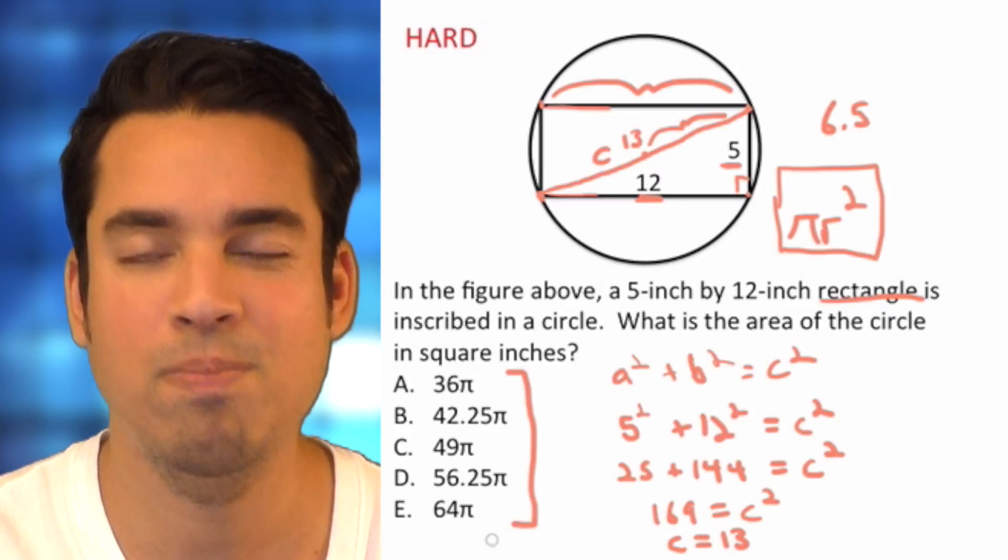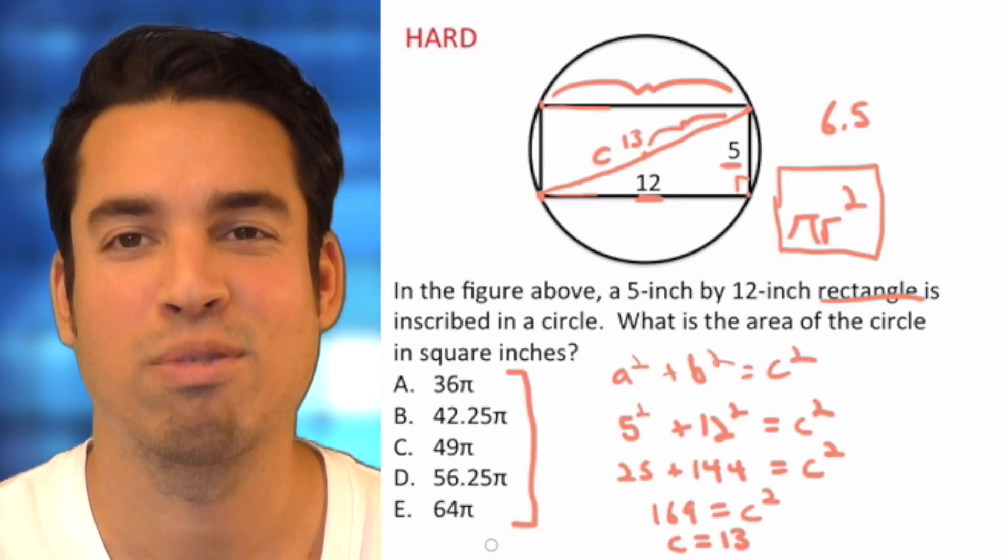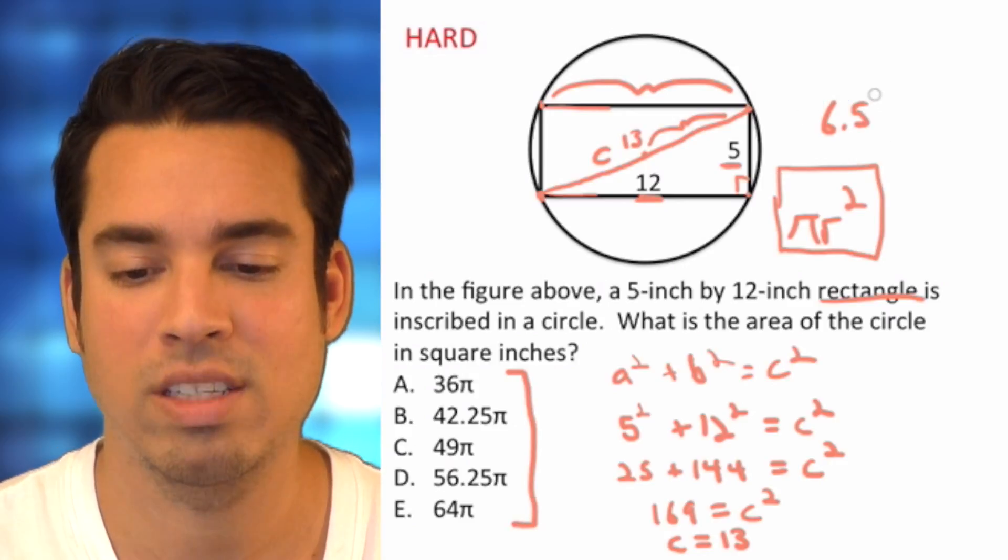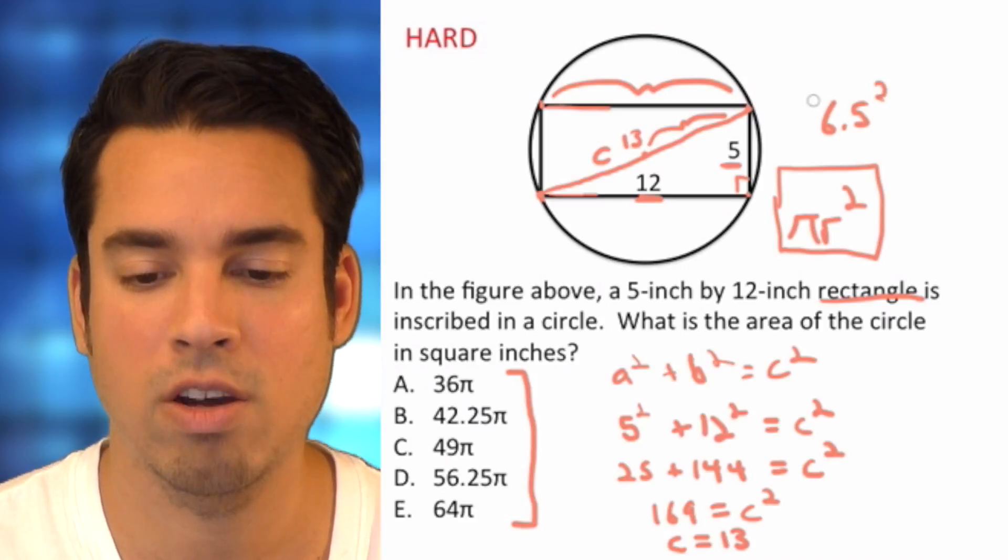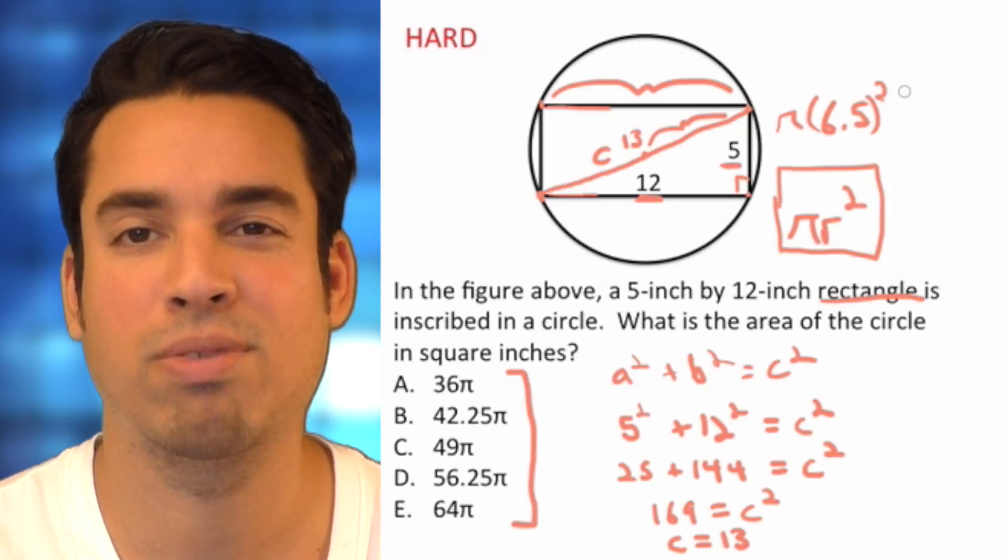So now let's go back and remember we want the area. Notice all the answer choices have pi in them, so we don't have to approximate for pi, which is really nice. So it's 6.5 squared, pi r squared, and that is our area.